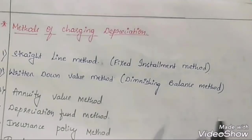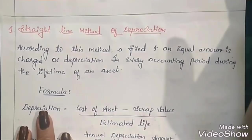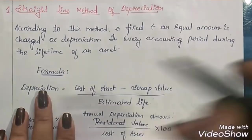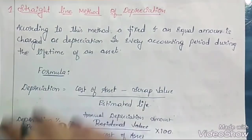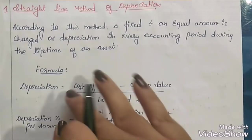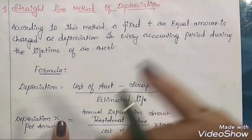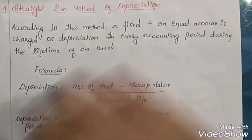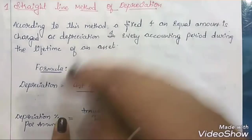Straight line method of depreciation: according to this method, a fixed and equal amount is charged as depreciation in every accounting period during the lifetime of an asset. So the same amount of depreciation is charged for every period. This is also called the fixed installment method because a fixed amount of depreciation is charged. Straight line method is also known as fixed installment method.